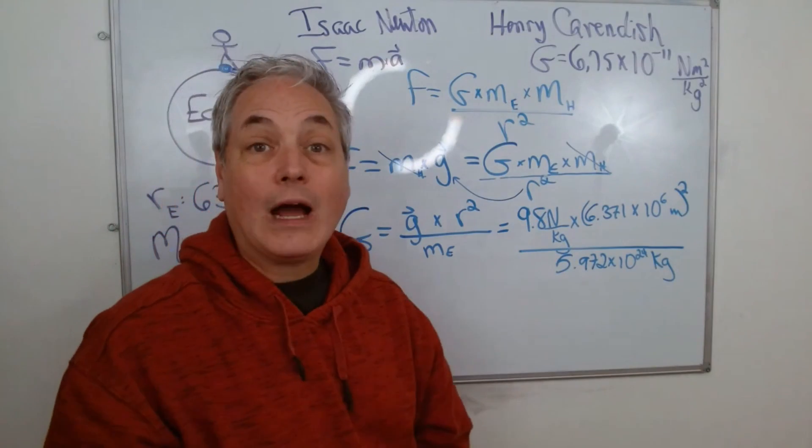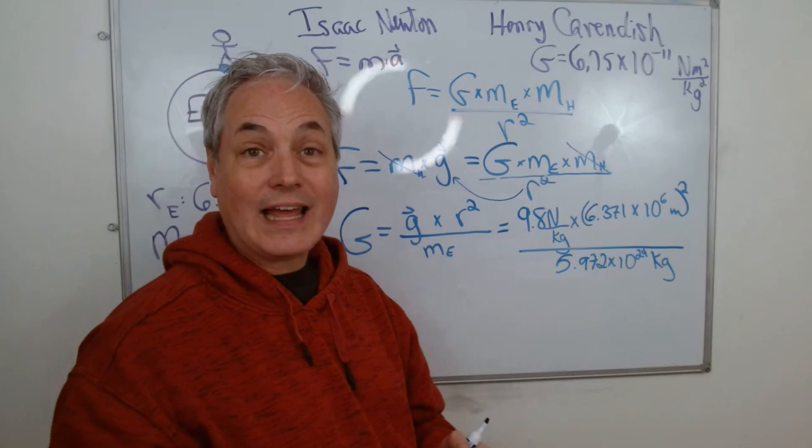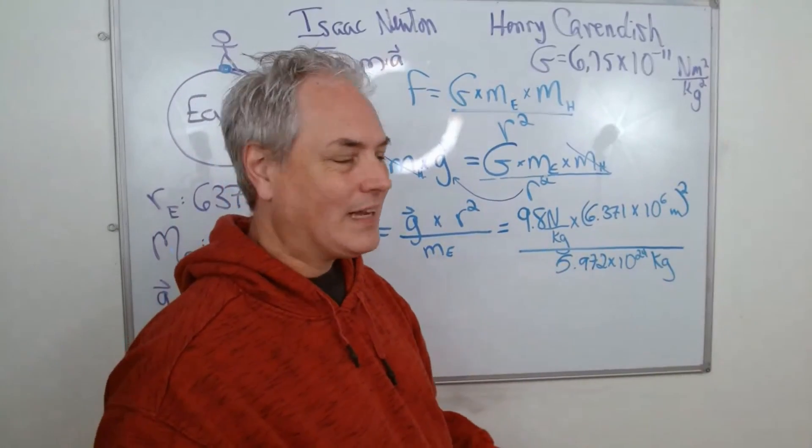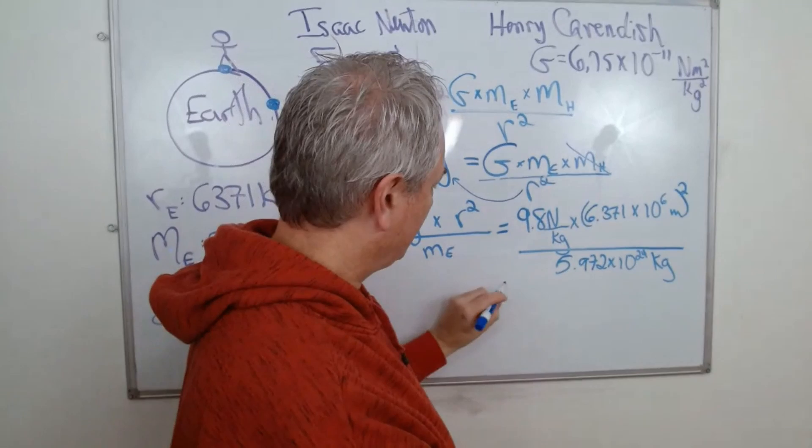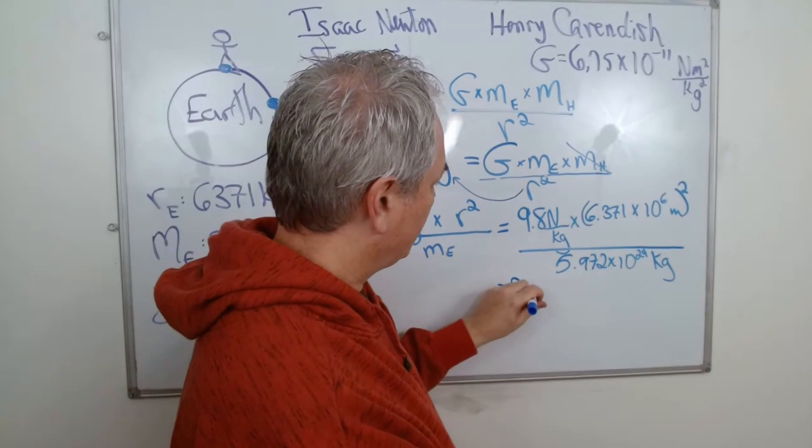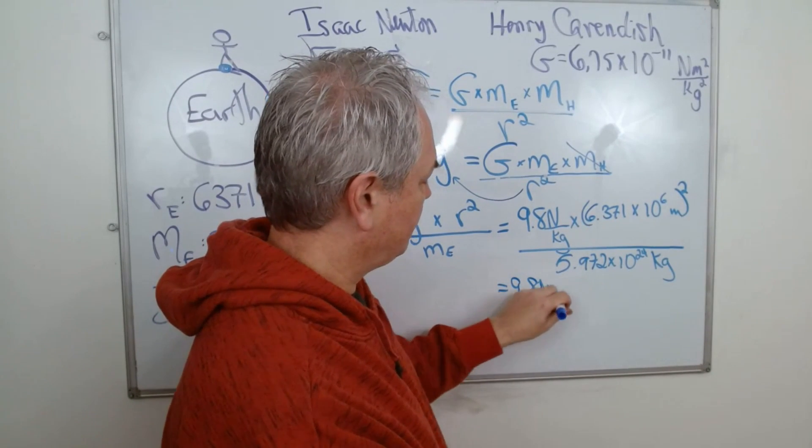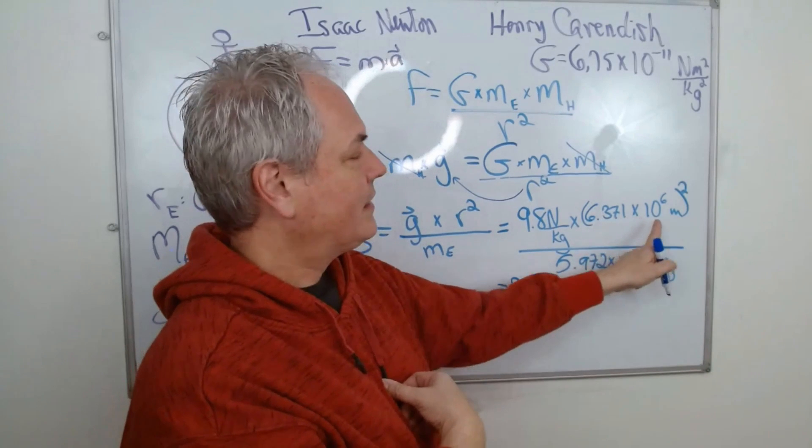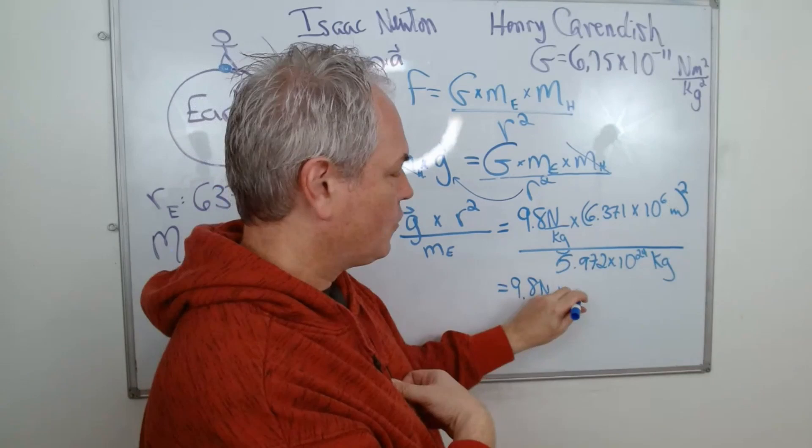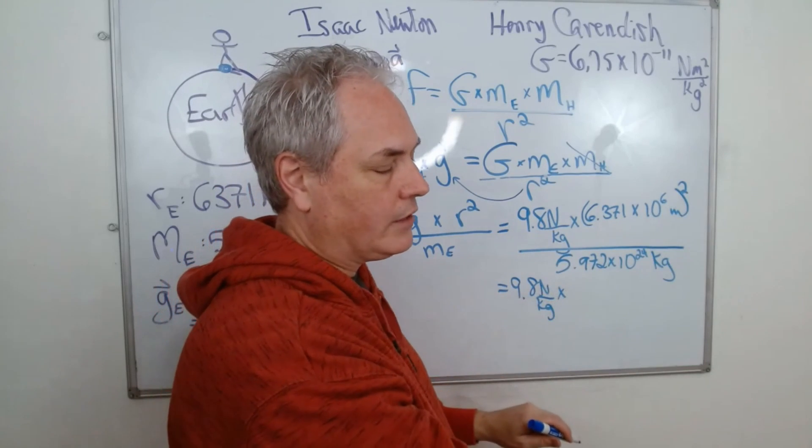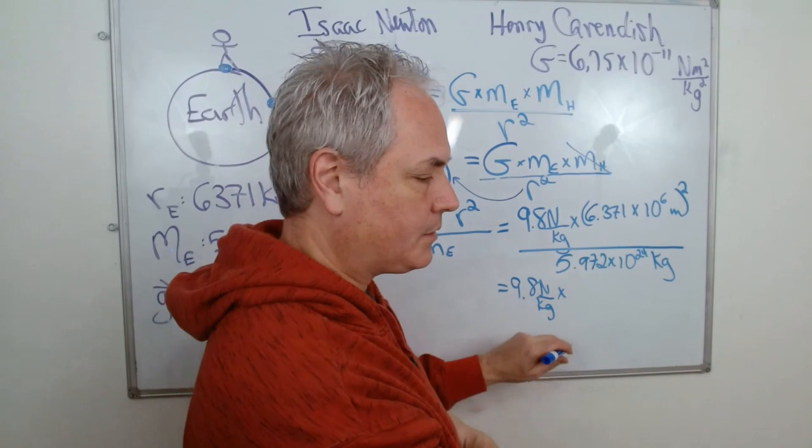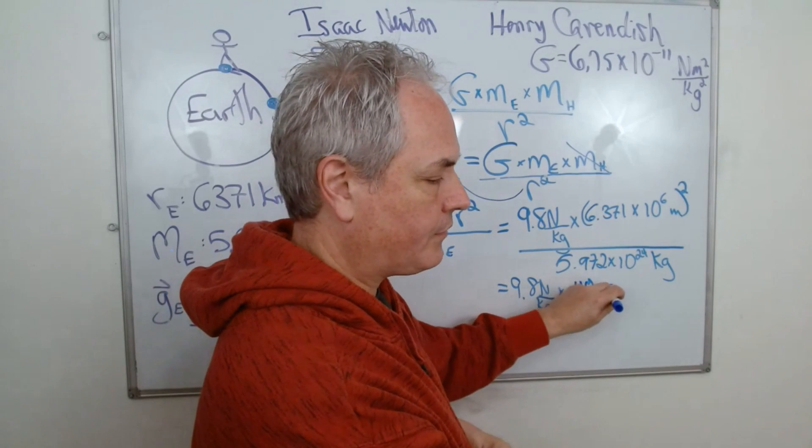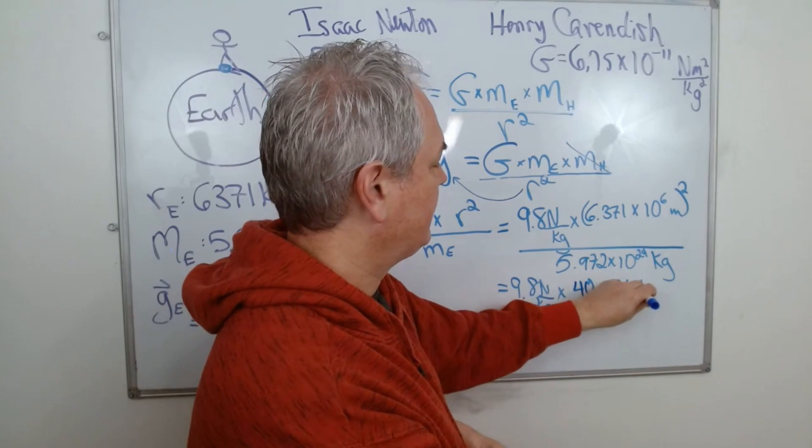Now from here we have all numbers. All we have to do is do our calculations. So let's see if we can actually simplify this a little bit. If I have here a number that is squared, let's see if we can change it a little bit. So we have here 9.8 newtons per kilogram times, and if you put 6.371 times 10 to the power of 6 squared, we have—so I use a quick calculator and I have this number squared, so I have 40.5896.